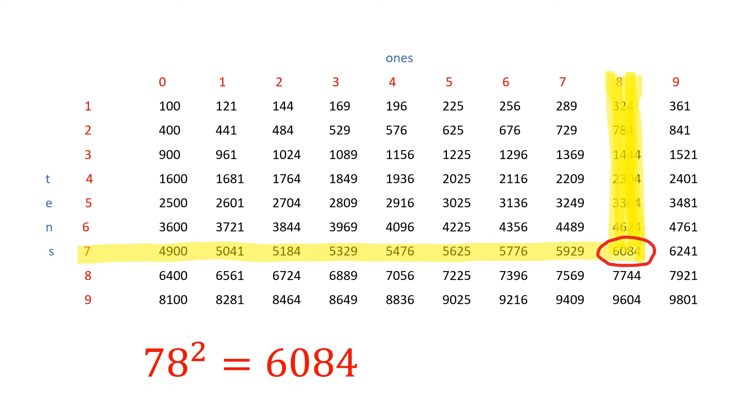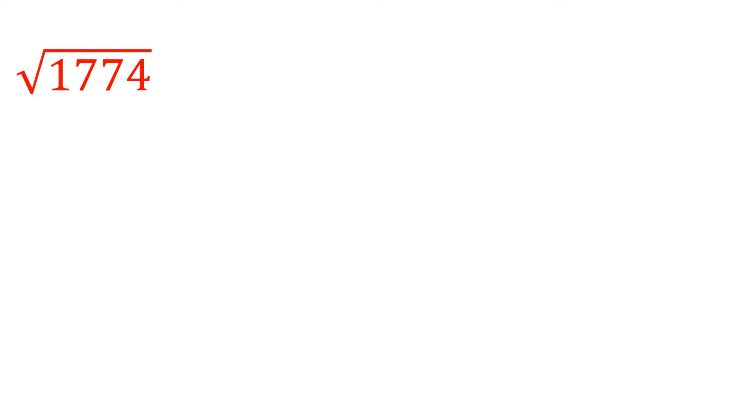For example, 78 squared is equal to 6084. Let's determine the square root of 1774.